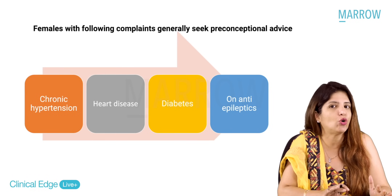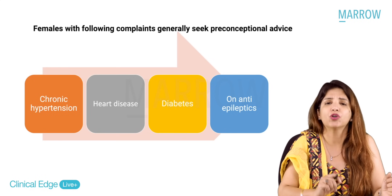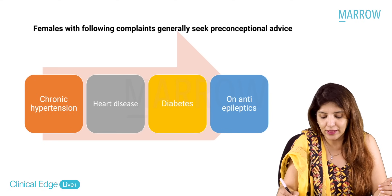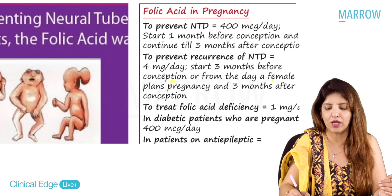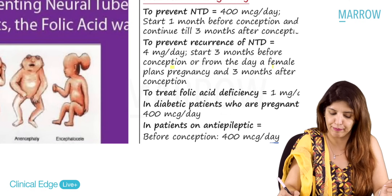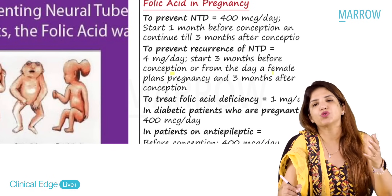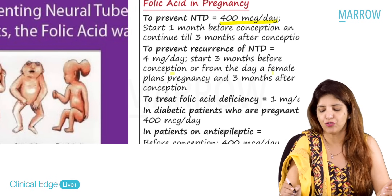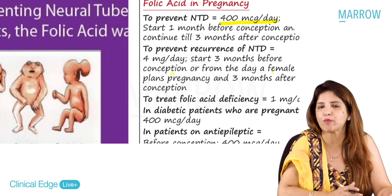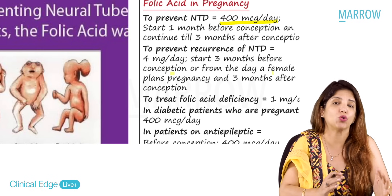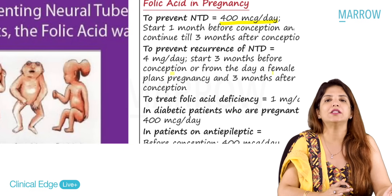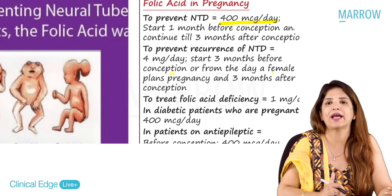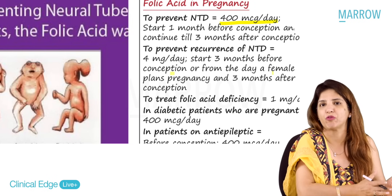In all females coming for preconceptional counseling, you must give folic acid to prevent neural tube defects. The dose for females with no history of NTD is 400 micrograms, started one month before conception and continued till three months of pregnancy. In females with a previous NTD baby, the dose is 4 milligrams per day, started three months before conception.